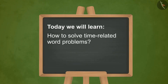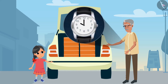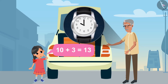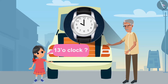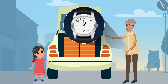Today we will learn how to solve time-related word problems. Our vehicle is ready to go — let's distribute mangoes to our relatives. Grandpa, how long will it take? Nearly 3 hours. It's 10 now — at what time shall we return? On adding 3 to 10 gives 13. After 12, again 1, 2, 3 begins. Moving 3 hours after 10 means 11 and 12 — and 1. So 3 hours after 10 means 1 o'clock in the afternoon.